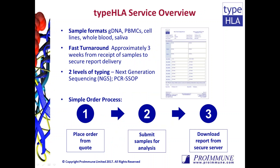Samples can be provided in various formats including genomic DNA, PBMCs, cell lines, blood, and saliva. Turnaround is typically three weeks from receipt of samples to provision of the report, and reports are delivered by secure electronic delivery in XLS and PDF formats.